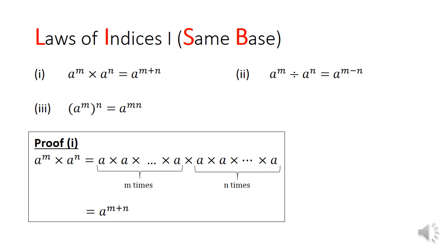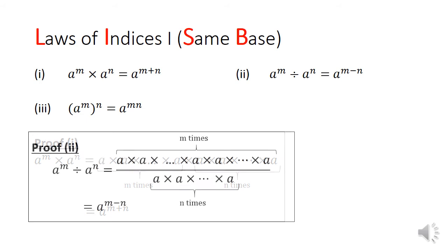In law 2, when we divide a to the power of m by a to the power of n, you will get a to the power of m minus n. A simple proof assumes that if m is larger than n, and we write this out as a fraction, you can cancel out a multiplied by itself n times from both the numerator and the denominator, resulting in a multiplied by itself m minus n times.